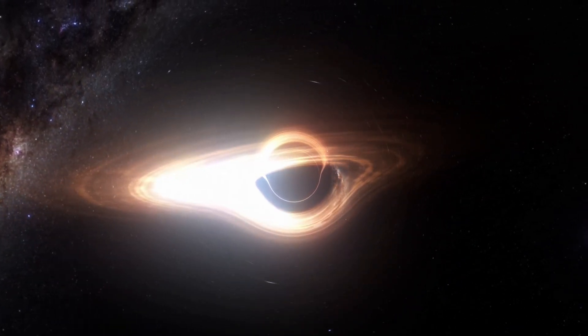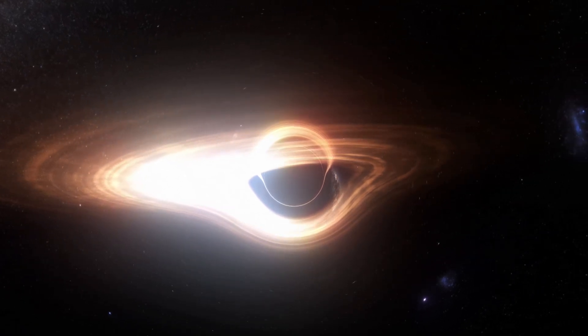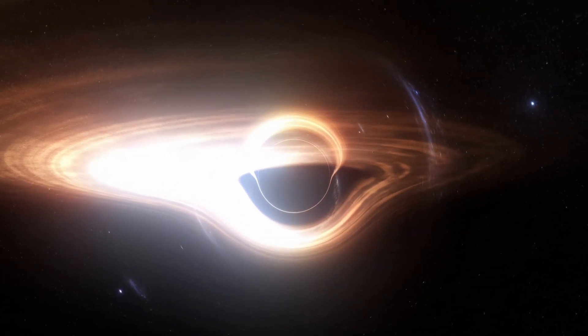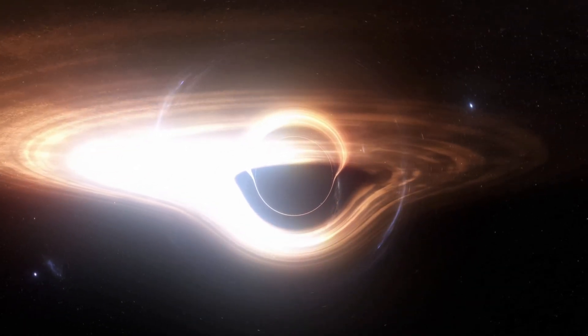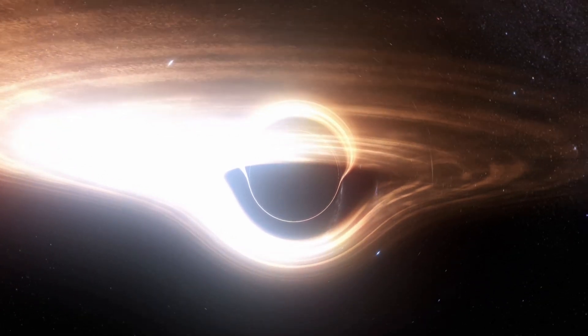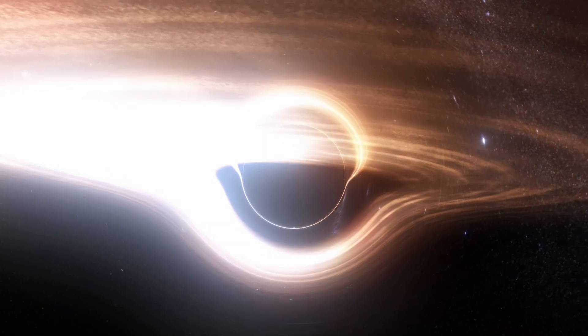At the black hole's boundary, called the event horizon, space-time is so extremely curved that all paths for objects, including light, lead inward. To an observer, it appears as if the black hole is sucking everything in. In reality, objects and light are merely following the paths dictated by the extremely warped space-time.